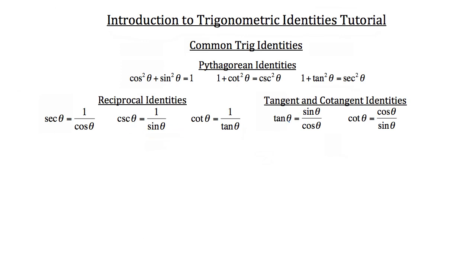Lastly, we have the tangent and cotangent identities. The tangent identity is that tangent theta is equal to sine theta over cosine theta. And the cotangent identity is that the cotangent of theta is equal to the cosine of theta over sine theta. What I'd like to do next is take a look at some practice problems and show you how we use these.